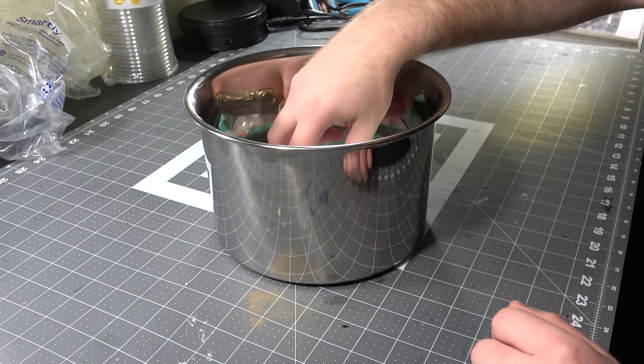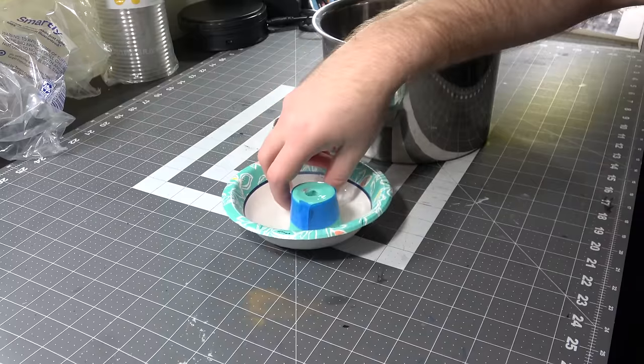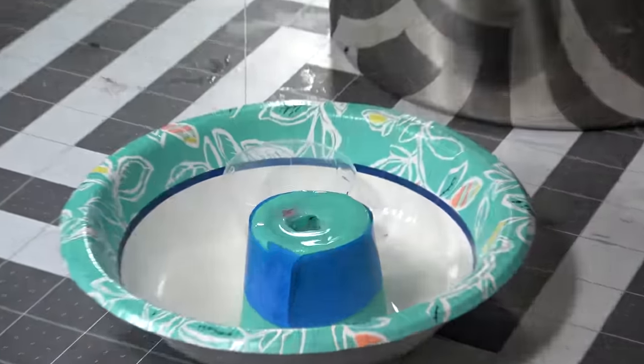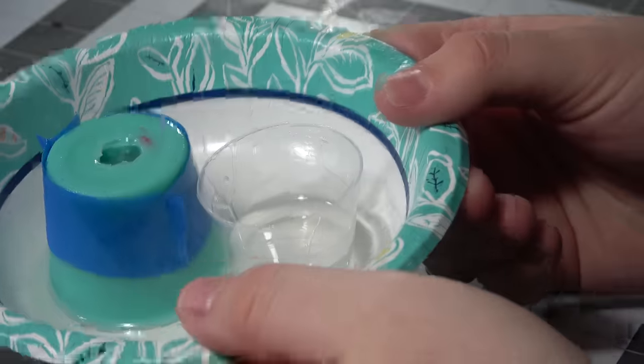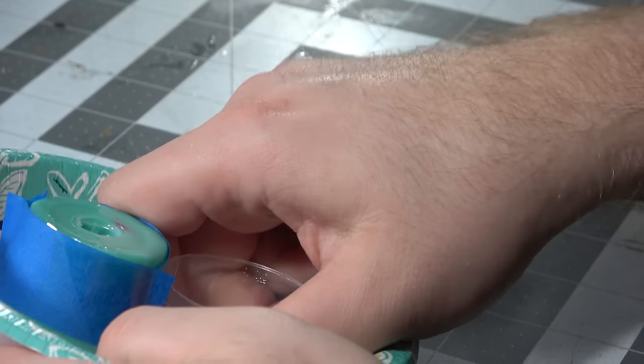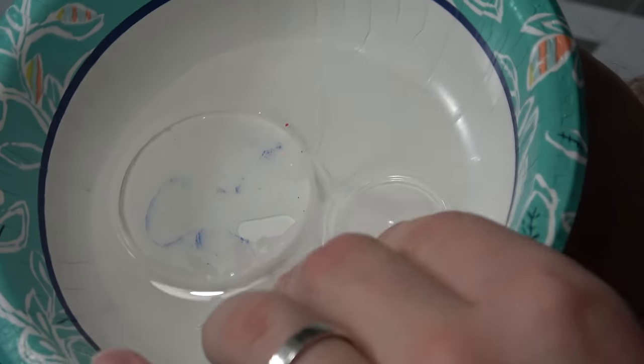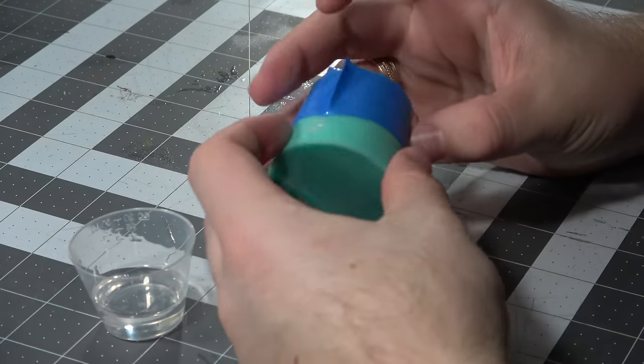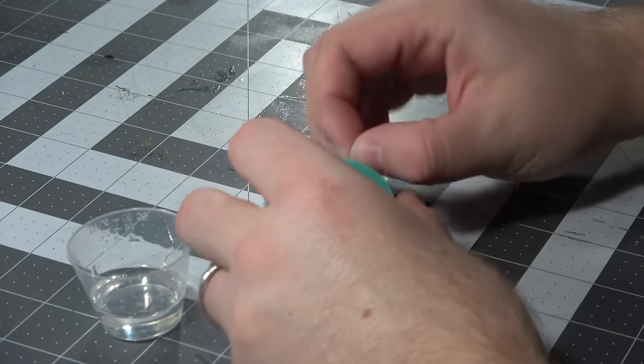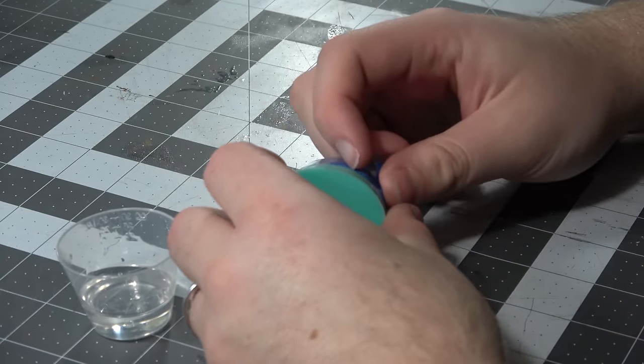After letting the resin cure in the vacuum chamber and in the pressure pot overnight, these are the final results between the two. You can see the resin here overflowed all over and luckily both of these things are kind of barely stuck in there and silicone doesn't really stick to resin so I'm able to pry the molds out of there. Glad I used that paper plate so I didn't have the cleanup.